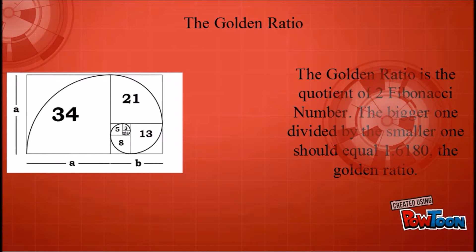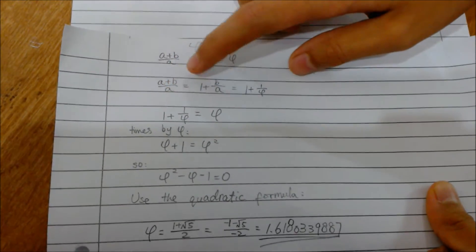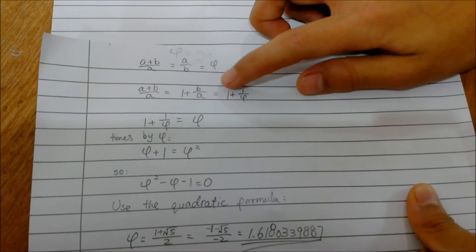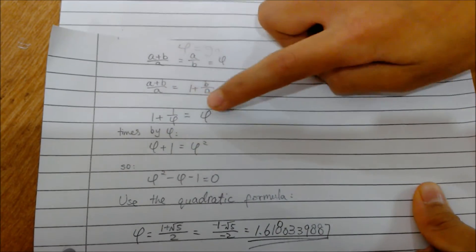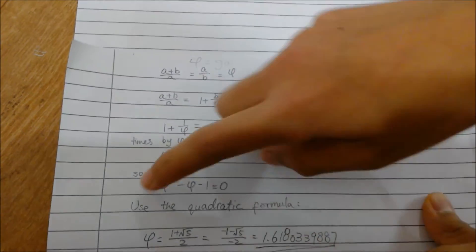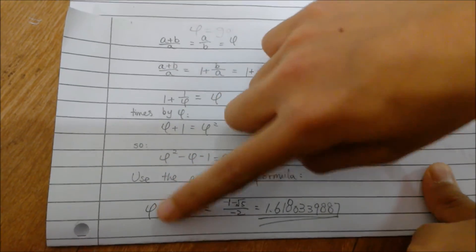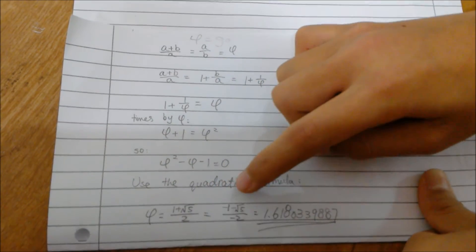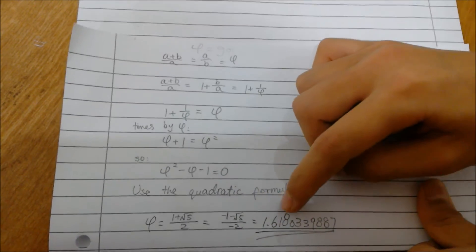Here's a spiral. So phi equals the golden ratio. So A plus B divided by A equals A divided by B equals phi. So A plus B divided by A equals 1 plus B divided by A equals 1 plus 1 divided by phi. 1 plus 1 divided by phi equals phi times by phi. So phi plus 1 equals phi squared. So phi squared minus phi minus 1 equals zero. So here's a quadratic formula. So phi equals 1 plus the square root of 5 divided by 2 equals 1.6180339887.